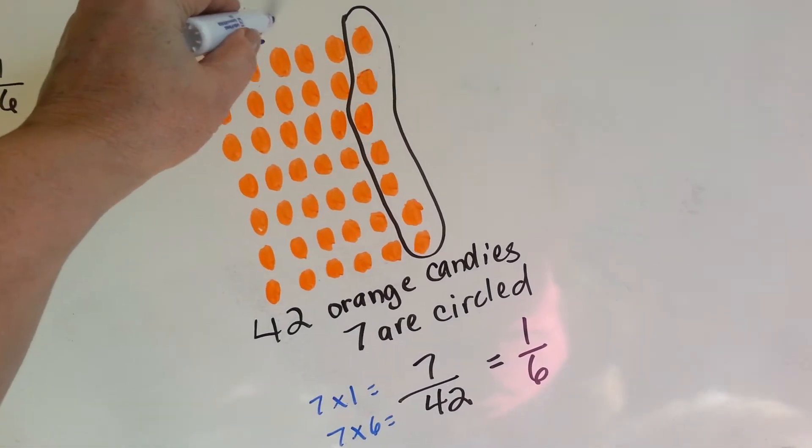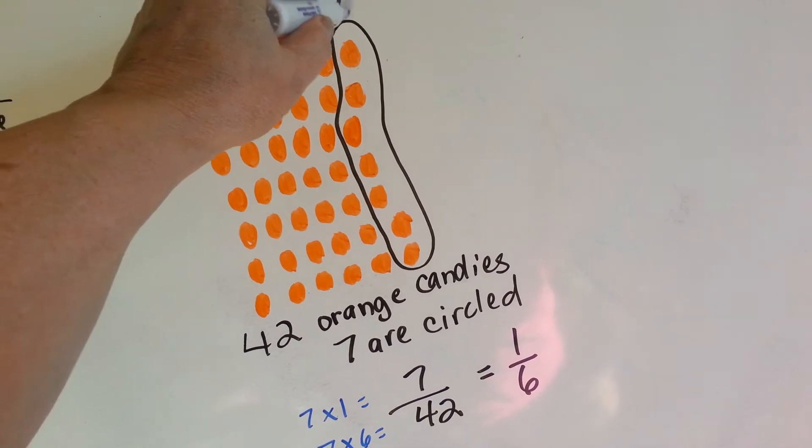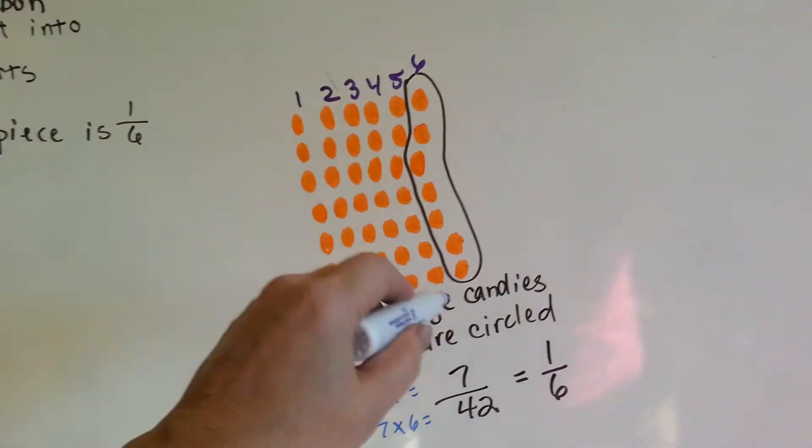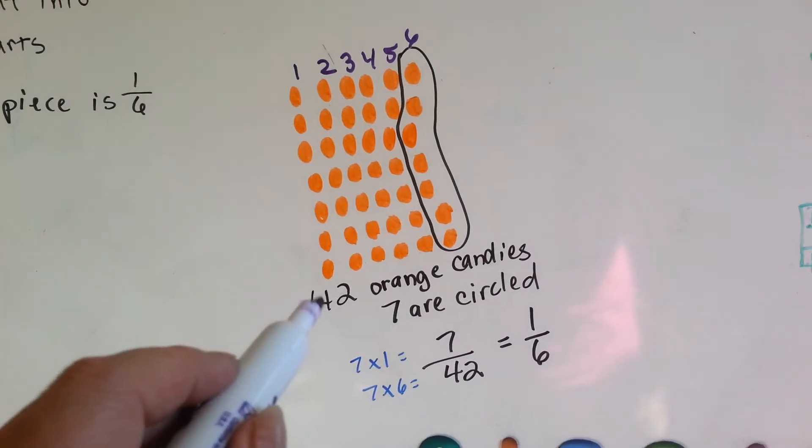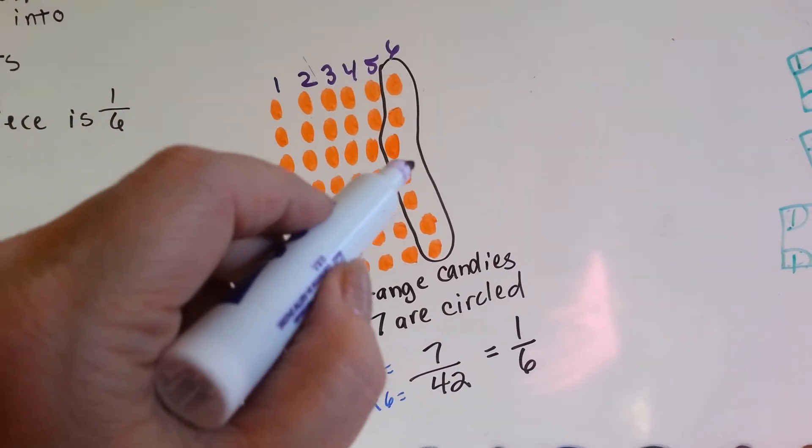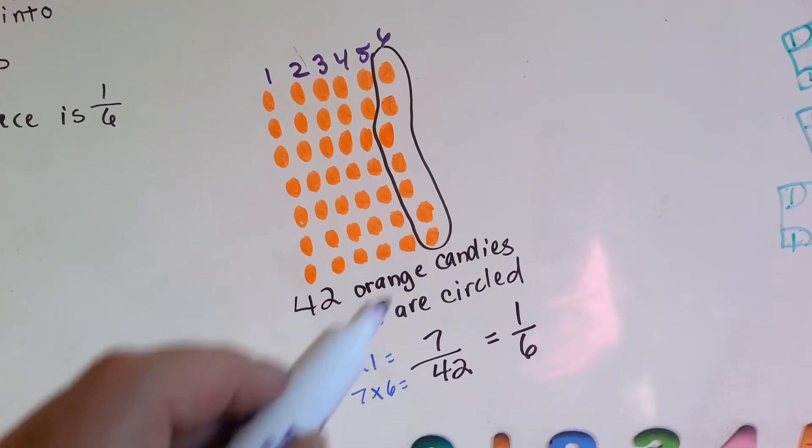So here's one group, two, three, four, five, six groups. And you're going to take one of those groups. So out of forty-two candies, you've taken seven. One, two, three, four, five, six, seven.